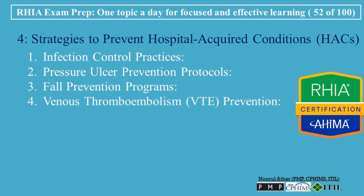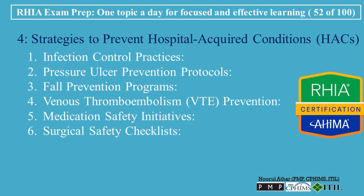Venous Thromboembolism, VTE, Prevention: Hospitals should implement strategies to prevent VTE, such as administering blood thinners, encouraging early patient mobility, and using compression devices for patients at risk of developing blood clots. Regular patient assessments help identify those at higher risk. Medication Safety Initiatives: Preventing Adverse Drug Events, ADEs, requires the implementation of medication safety protocols, such as using electronic prescribing systems to reduce errors, conducting regular medication reconciliation, and providing staff training on safe medication administration. Surgical Safety Checklists ensure that surgical teams follow consistent protocols to prevent foreign objects from being left inside the patient's body, including a thorough count of surgical tools and materials.